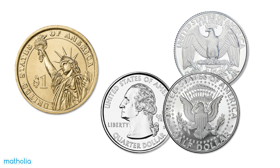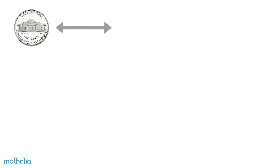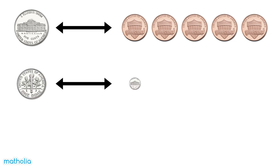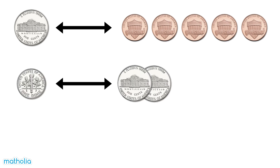Let's learn to exchange coins. Coins of a higher value can be represented by multiple coins of less value. Here are some ways we can exchange coins: one five cent coin is worth the same as five one cent coins. One dime is worth the same as two five cent coins.